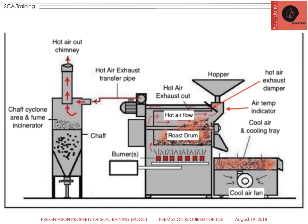There should be, on the outside, some sort of an air temperature indicator, so we're able to read the temperature before we charge the beans and also while we are roasting the coffee. That may include a bean thermometer probe, a temperature probe, and a computer readout or screen. This is a more traditional diagram. Up above, the hot air exhausts out, and depending on our hot air exhaust damper — how far open or closed it is — that will allow for more or less hot air to escape from the roaster.